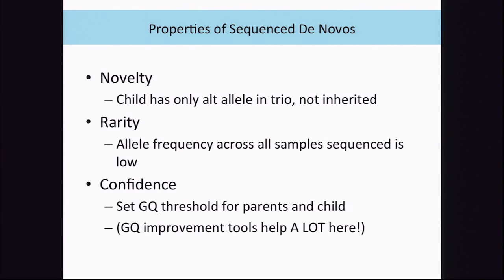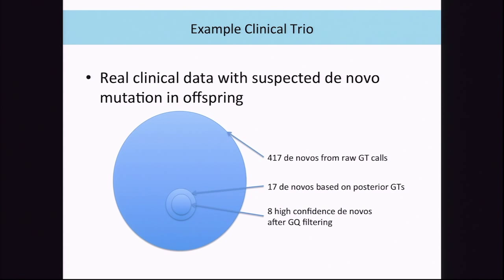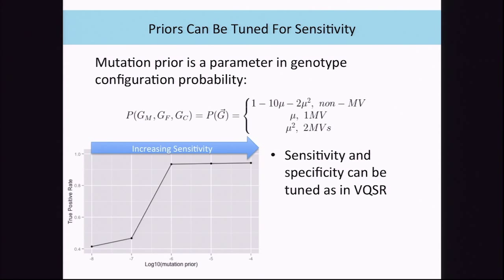In a real clinical family example: based on raw haplotype caller genotypes, there are 417 possible de novo sites—honestly a lot to send out for clinical validation. Applying population priors and family priors brings this down to 17 possible de novo sites. After filtering out low-GQ sites, we're left with only 8 high-confidence de novo sites. You can tune the de novo mutation prior—empirically about 10 to the minus 8—if you want increased sensitivity or improved specificity, tuned similarly to the VQSR tranches.